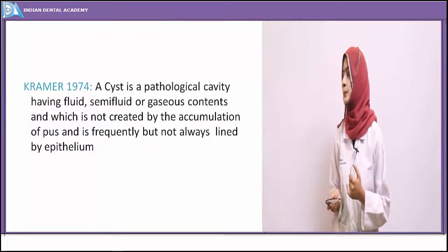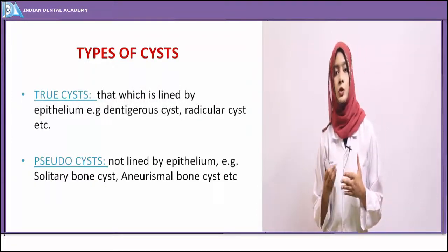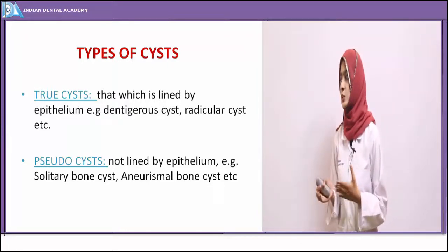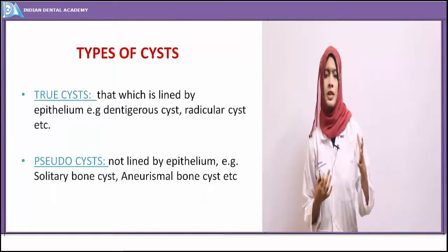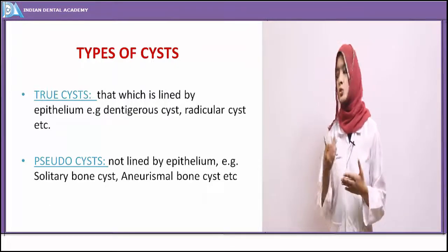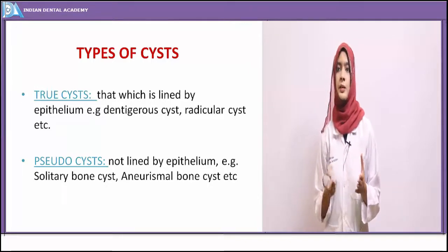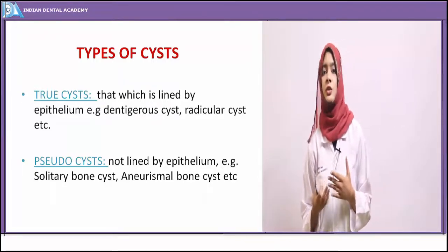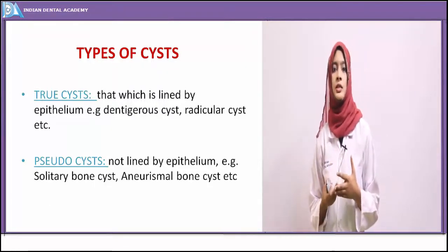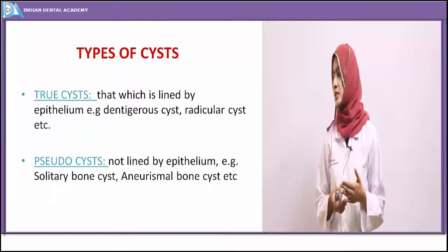Cysts may be of two types: epithelial cysts or non-epithelial cysts. Epithelial cysts are true cysts — lined by an epithelial lining. True cysts include dentigerous cysts and radicular cysts; about 70 to 80 percent of cysts are true cysts. Pseudo cysts are those not lined by epithelium, such as aneurysmal bone cysts, where no epithelial lining is seen.